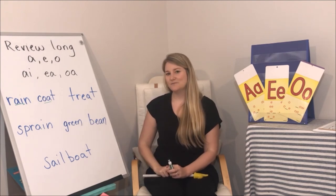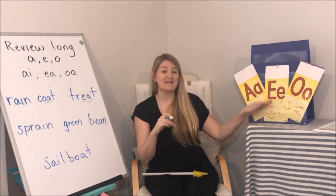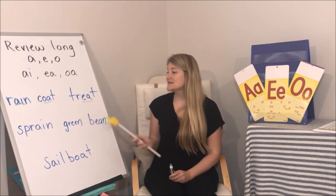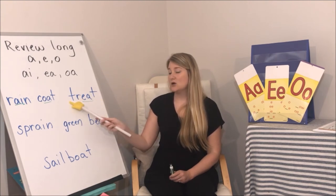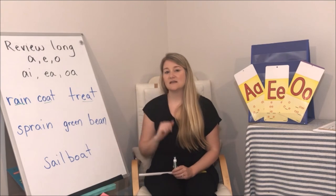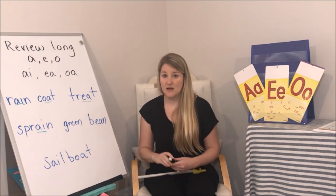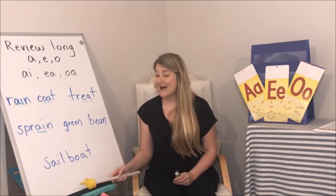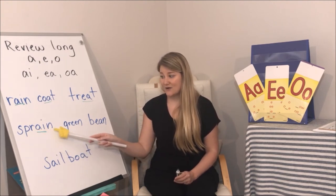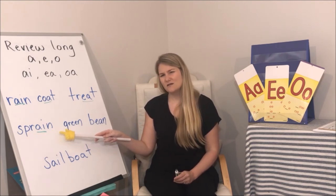Tell me the vowel spelling in this word. I see an E and an A next to it — E-A. Together they're going to say that long E sound. Let's blend: T-R-E-A-T. Take your time — treat. Now, where's the vowel spelling in this word? Shout out the letters. A-I. Excellent. We've got a lot of sounds in this one — blend: S-P-R-A-I-N. What's the word? Sprain.